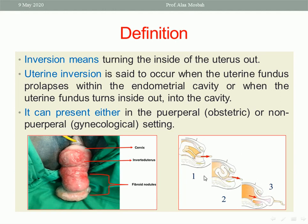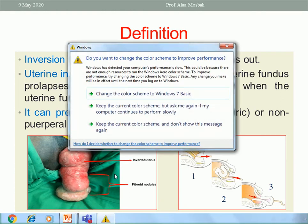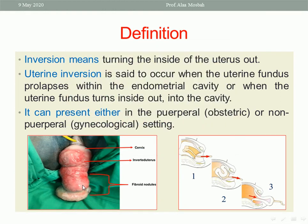This is an example of acute inversion. In this picture, another type is chronic inversion — as you see, this is a fundal fibroid. This fibroid causes traction and causes the uterus to be inverted. So inversion can present either as puerperal due to obstetric causes, or non-puerperal — a gynecologic setting.